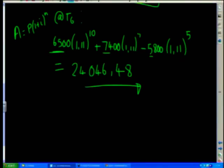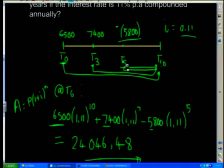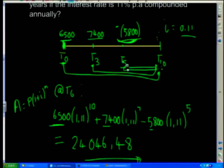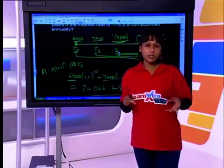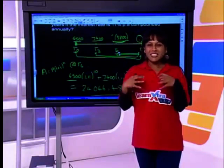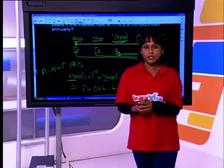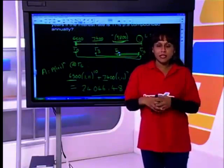Let's recap what I've done: starting at time 0, I worked out what 6,500 Rand would be worth at time 10. Then I looked at 7,400 Rand and worked out its value at time 10. For the withdrawal of 5,800 Rand, I moved it to time 10 and subtracted it. You add and subtract all amounts at the same specific point in time. With Method 1, you can only add things together if they are at the same point in time.